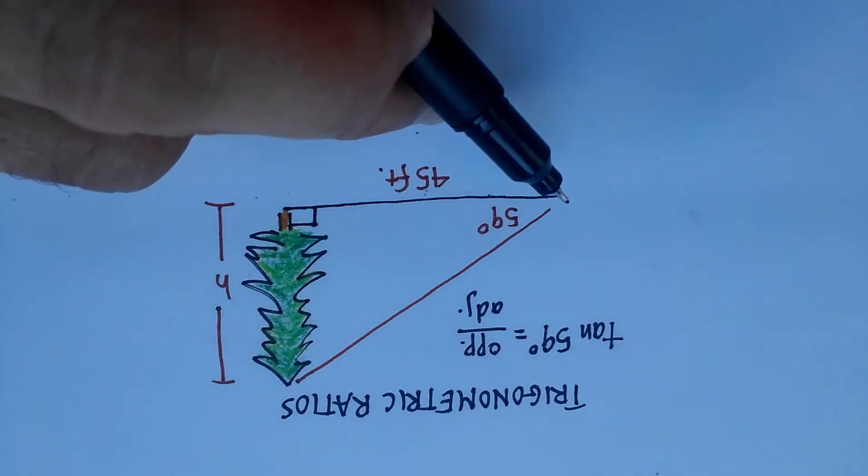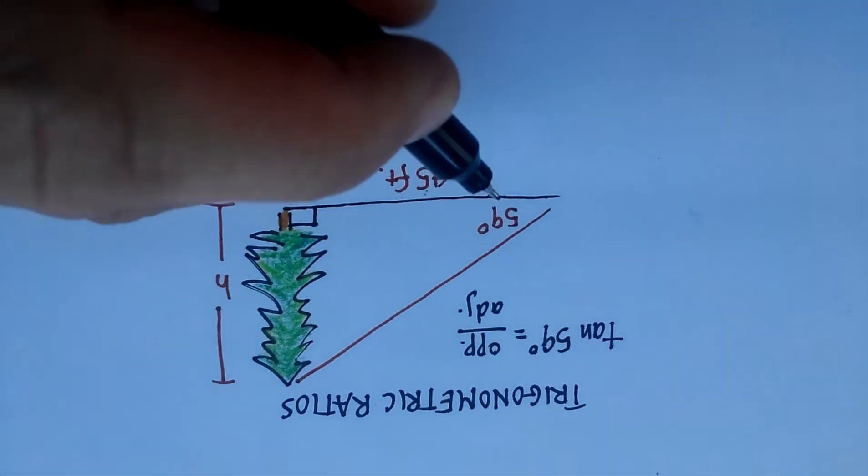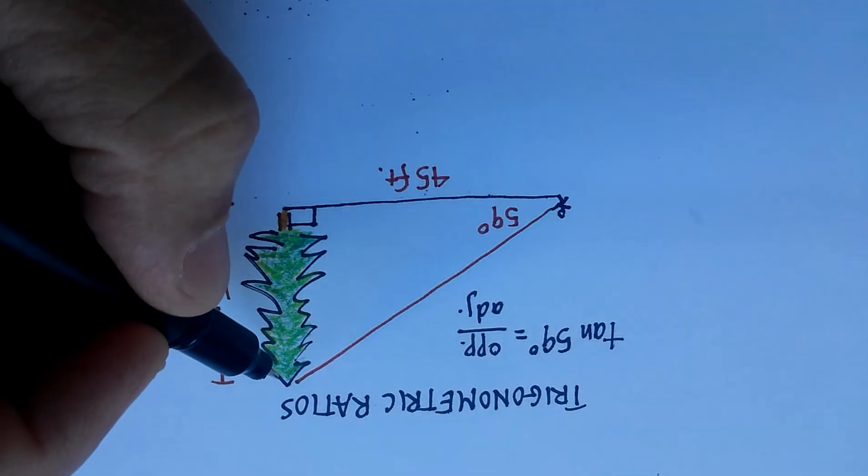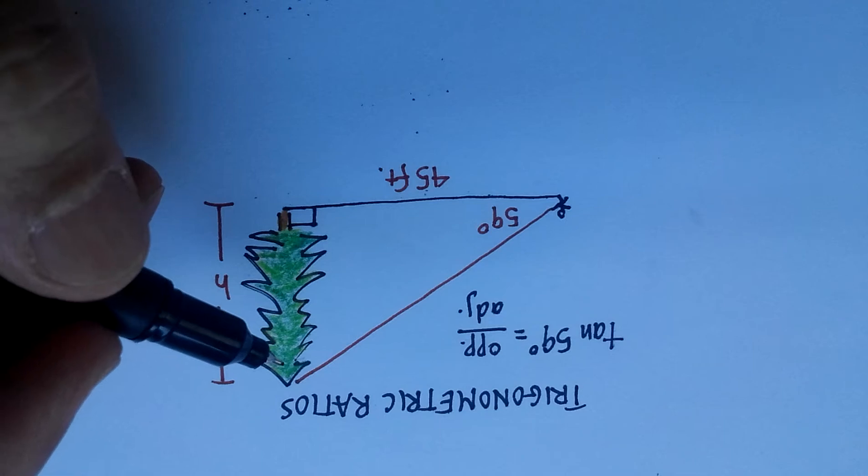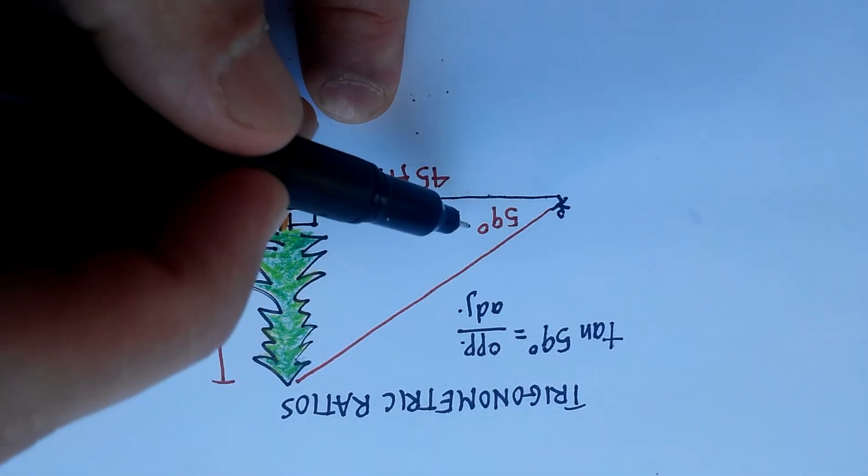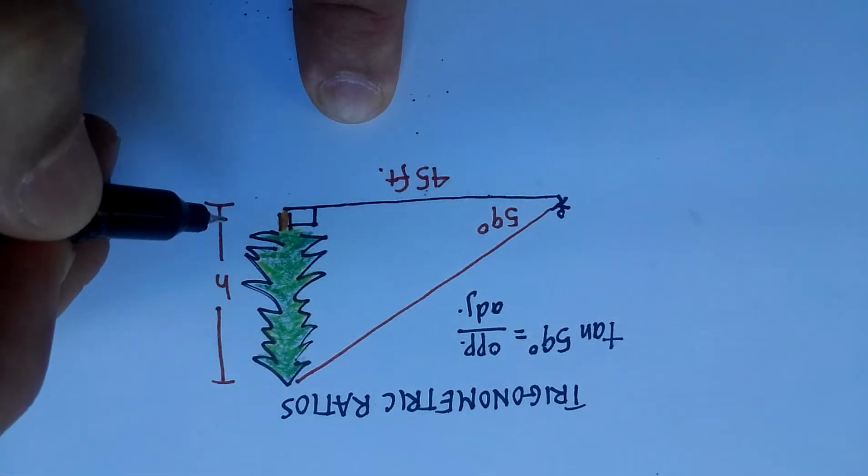And we also notice that we have a 59-degree angle from where we're standing here to the top of the tree. And we're using some kind of a clinometer. And we notice that we have 59 degrees. And we can actually estimate the height of this tree by using a trigonometric ratio.